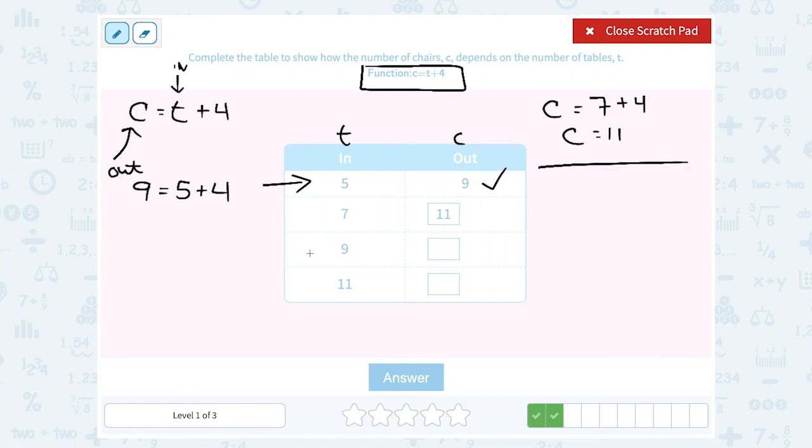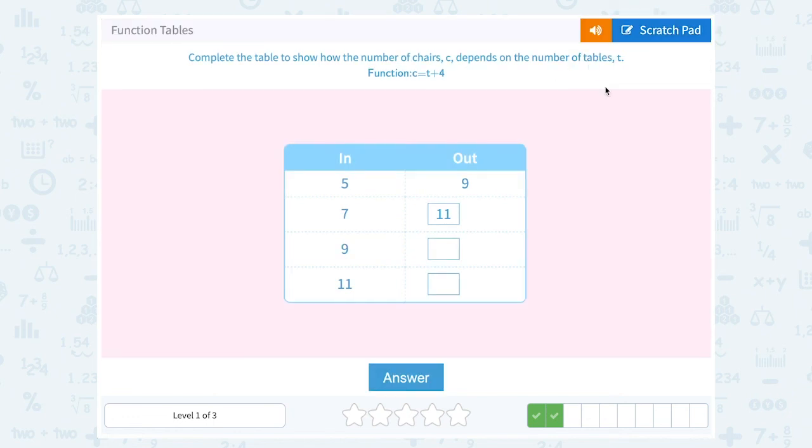For the next row in my table, I want to put in 9 for t. So I'm going to say c, instead of t plus 4, I'm going to say 9 plus 4. Well 9 plus 4 gives me 13. Or another way to say that is I get out 13 for c.